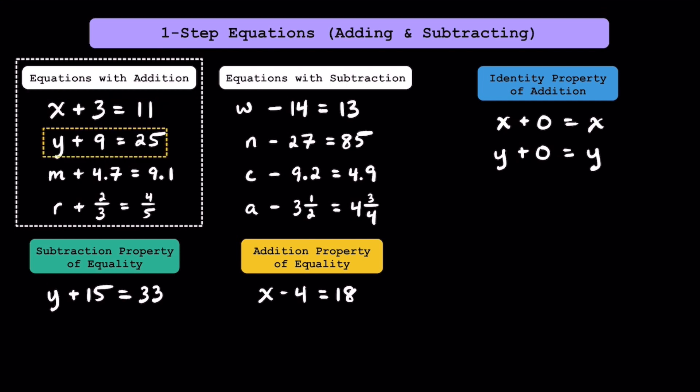Can you think of the only value for y that makes this equation true? If you were thinking y equals 16, good job. 16 is the only number in the world that makes this equation true. Even though these two equations have decimals and fractions, they work the same way. A little later in the video, I'll be going over some practice problems involving fractions and decimals as well.